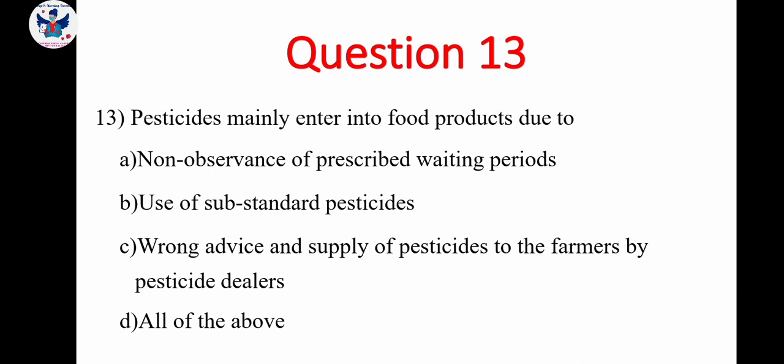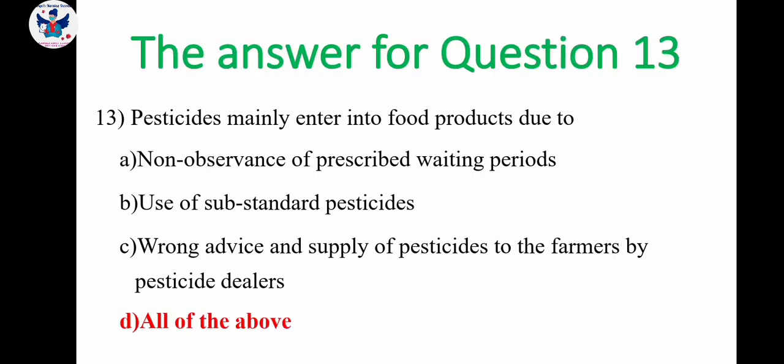Next, question 13. Pesticides mainly enter into food products due to A, non-observance of prescribed waiting periods. B, use of substandard pesticides. C, wrong advice and supply of pesticides to the farmers by pesticide dealers. D, all the above. So here all the above. Because all answers are related to the pesticides, how it is entering into food products. So all the options are correct. So the answer is all the above.